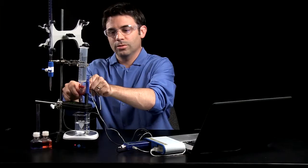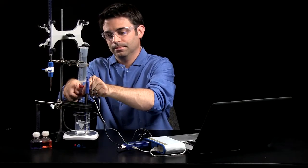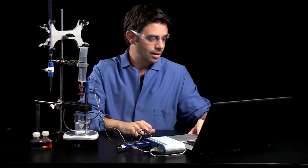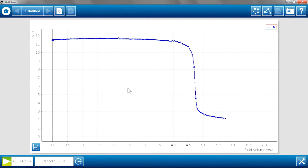Okay, I'm going to turn off the drop dispenser. And I'll stop data collection. Now we have a textbook example of a pH titration curve of a strong base with a strong acid.